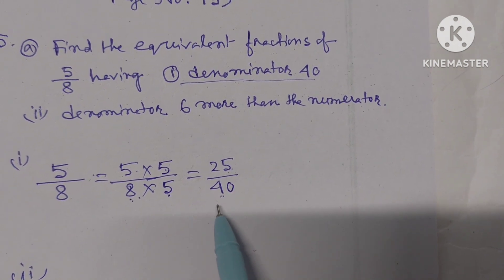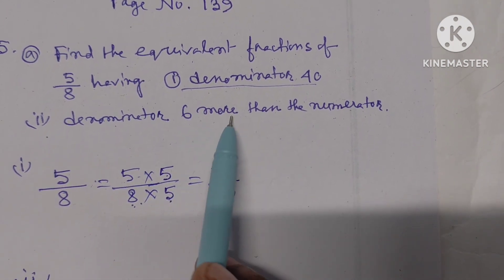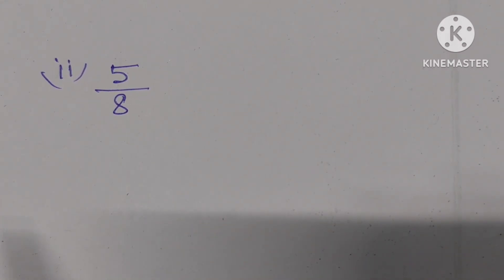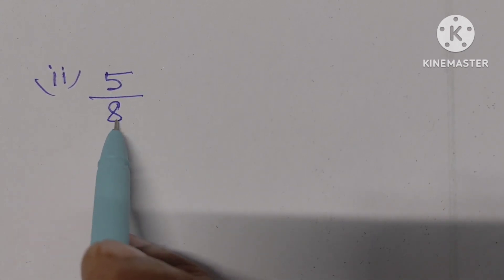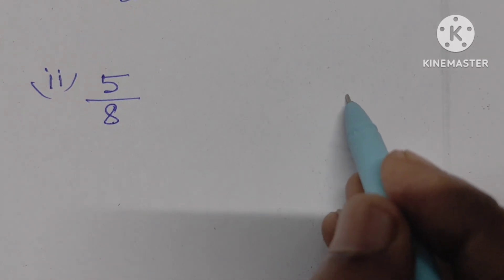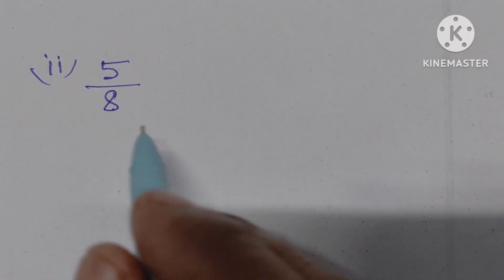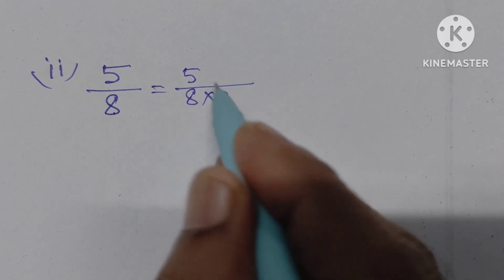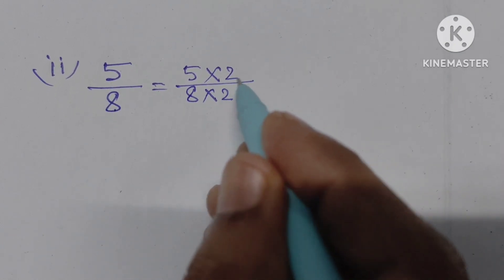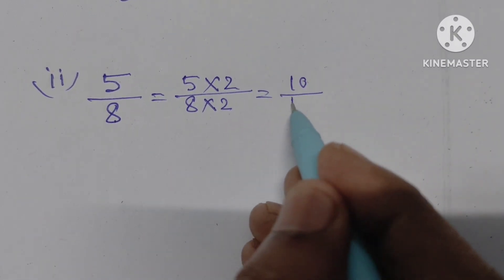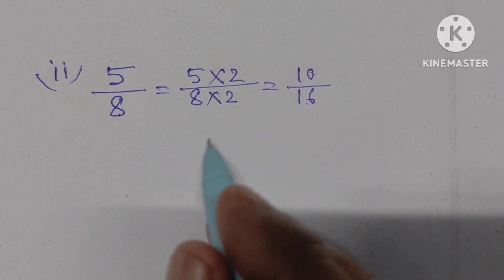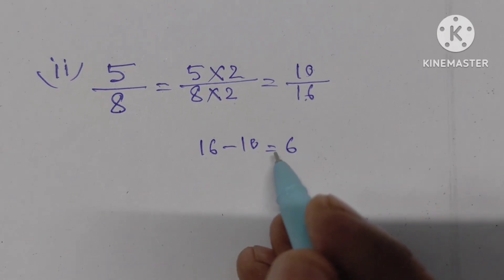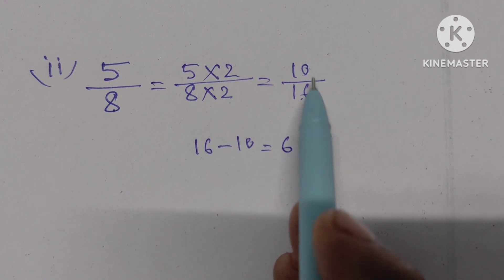Number two: denominator 6 more than the numerator. The denominator is 8. We need to make it 6 more. If we multiply the numerator with 2, we also multiply the denominator with 2. 5 times 2 is 10, 8 times 2 is 16. Here the denominator is 16 and the numerator is 10. 16 minus 10 equals 6, so the denominator is 6 more than the numerator.